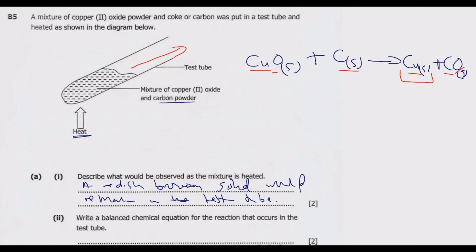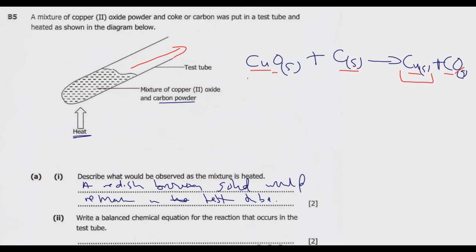The balanced equation is: copper oxide (solid) plus carbon (solid) gives copper (solid) plus carbon monoxide (gas). Once you write that, you are good to go.